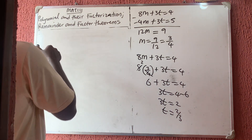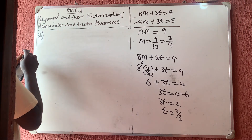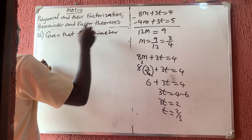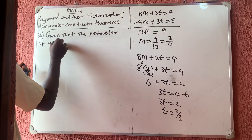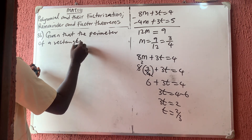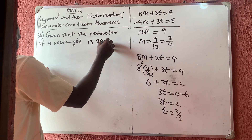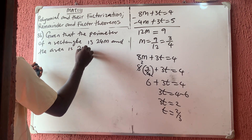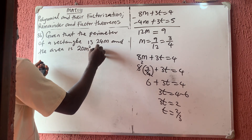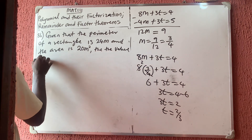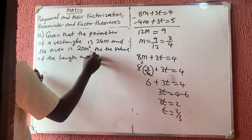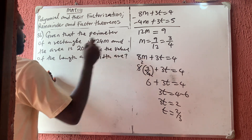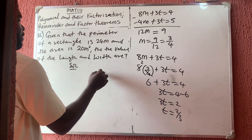The next question is question number 86: Given that the perimeter of a rectangle is 24 metres and the area is 20 metres squared, find the value of the length and width.